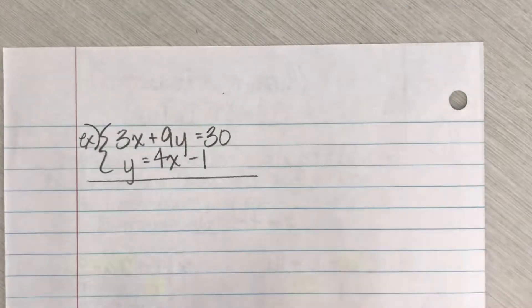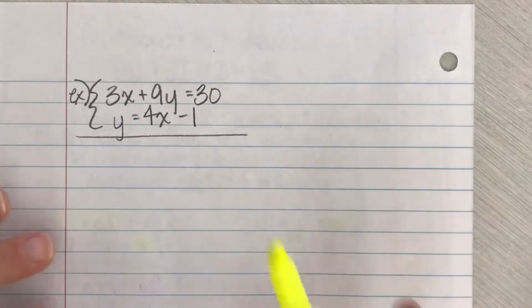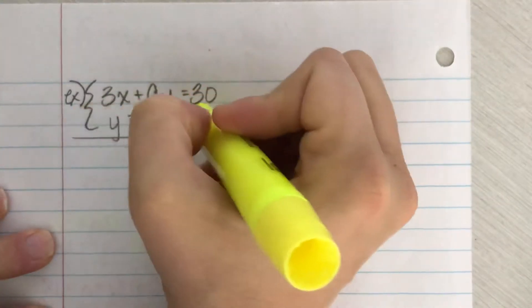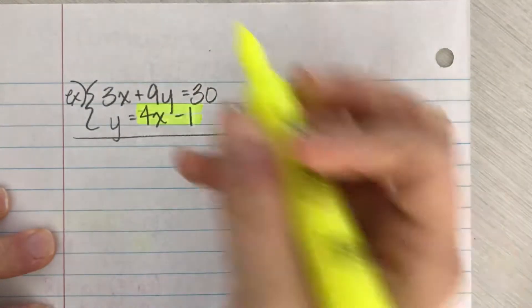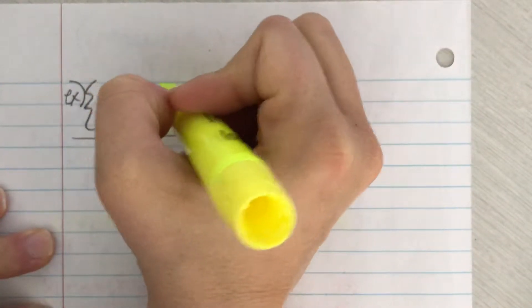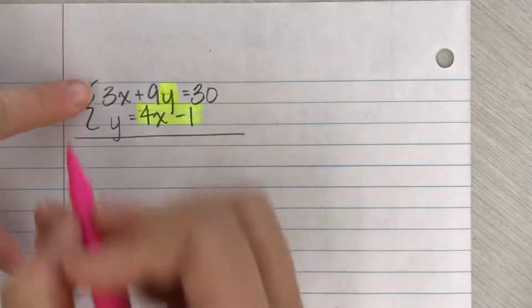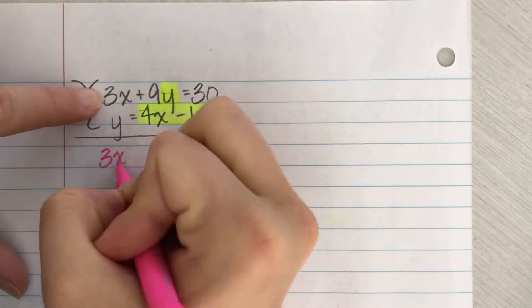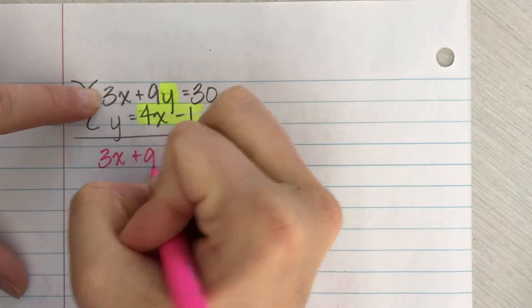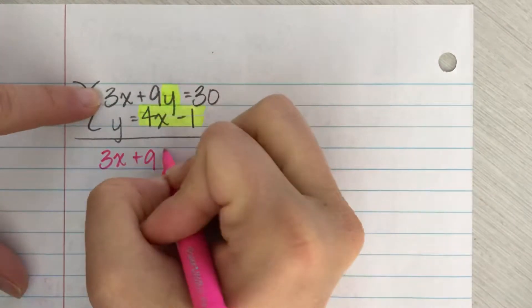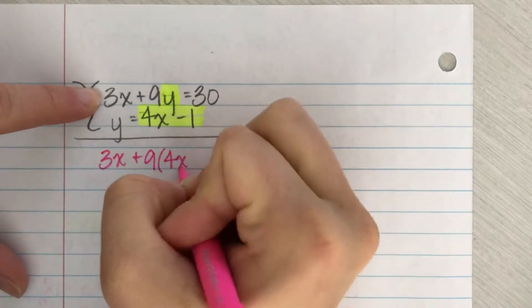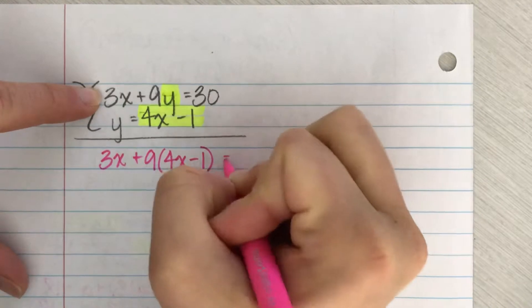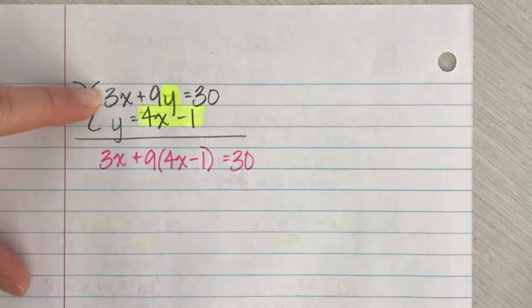Let's say 3x plus 9y equals 30 and y equals 4x minus one. All right. So I have a y formula. Y is 4x minus one. So I'm going to plug that in up here for my y formula.